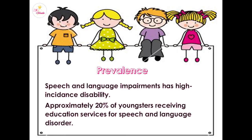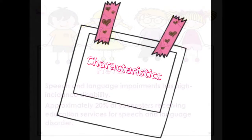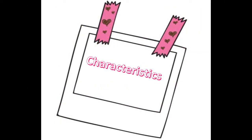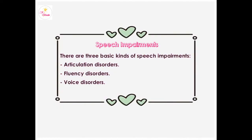Prevalence: speech and language impairment is a high incidence disability, with approximately 20% of youngsters receiving education services for speech and language disorders. There are three basic kinds of speech impairments: articulation disorders, fluency disorders, and voice disorders.